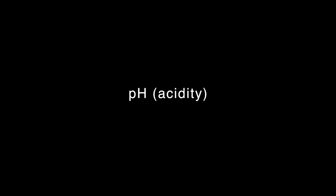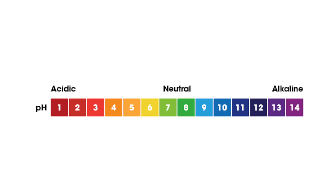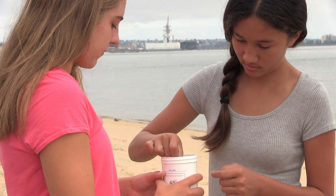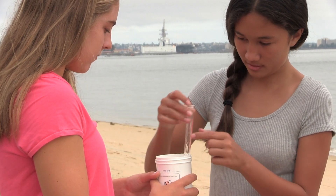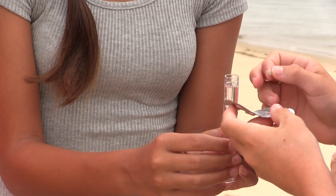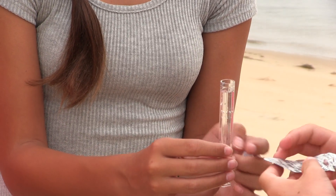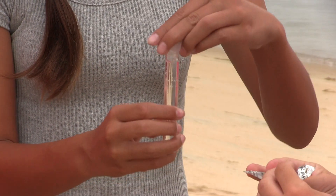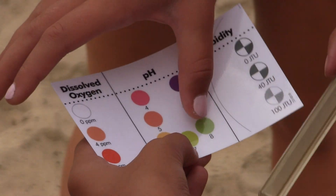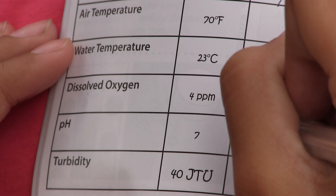pH measures how acidic or basic a liquid is. pH is measured on a scale from 0 to 14, where 0 is most acidic, 14 is most basic, and 7 is neutral. A pH between 6.5 and 8.5 is favorable for supporting life in natural waters. Fill the test tube to the 10 milliliter line with the water sample, add one pH wide range test tab, and once the tab is disintegrated, compare the color of the sample to the pH color chart.